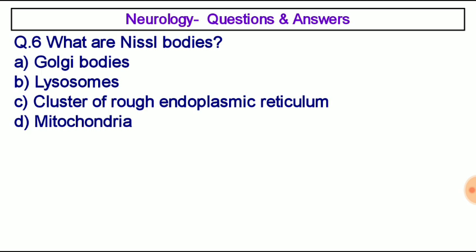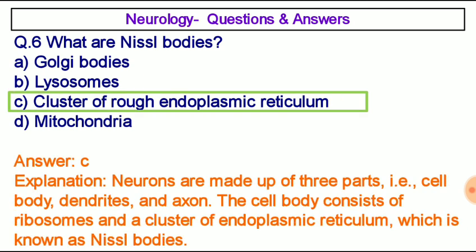Question number six: What are Nissl bodies? Option A: Golgi bodies, option B: lysosomes, option C: cluster of rough endoplasmic reticulum, option D: mitochondria. The correct answer is option C, cluster of rough endoplasmic reticulum. Neurons are made up of three parts: cell body, dendrites, and axon. The cell body consists of ribosomes and a cluster of rough endoplasmic reticulum, which is known as Nissl bodies.